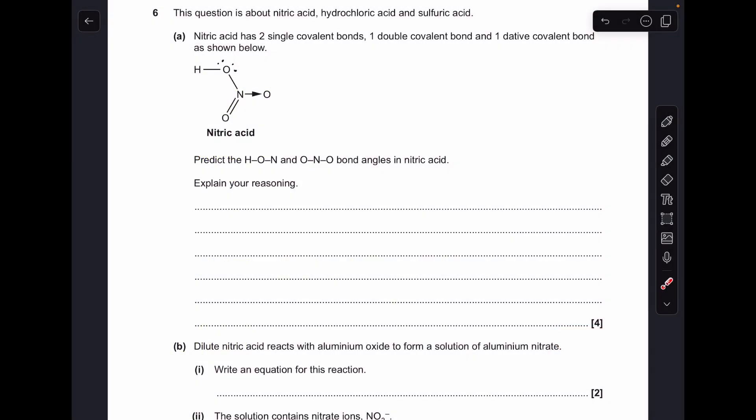So for part A, we've got to consider the number of electron regions around the central atom to get the bond angles. You can see I've already put two lone pairs on the oxygen for that HON bond angle, so we've got a total of four electron regions, two bonding regions and two lone pairs.